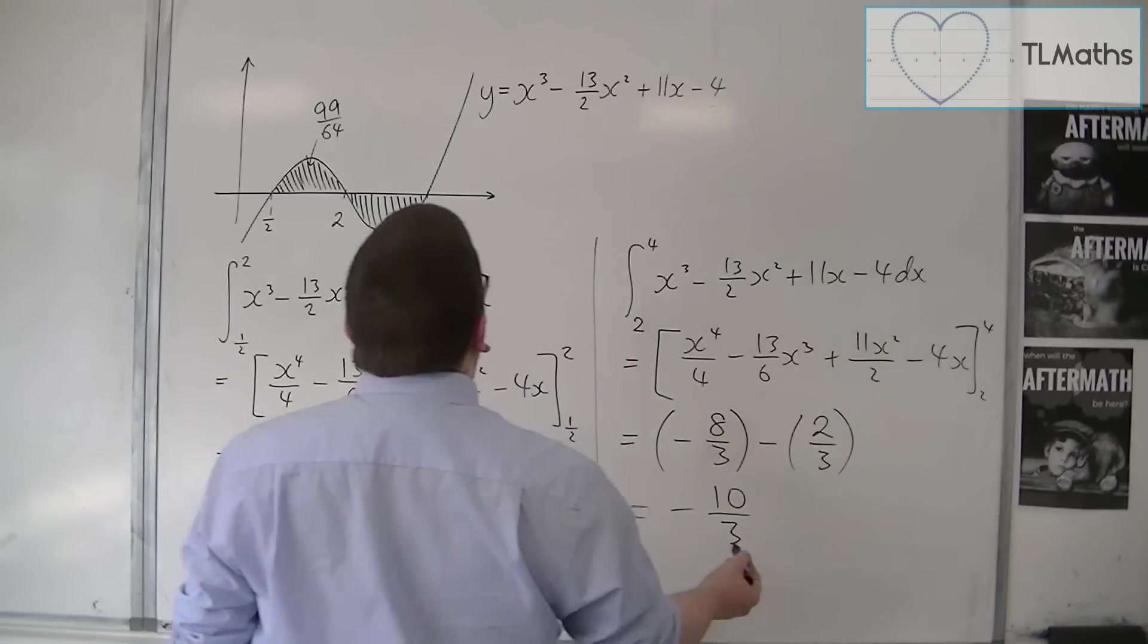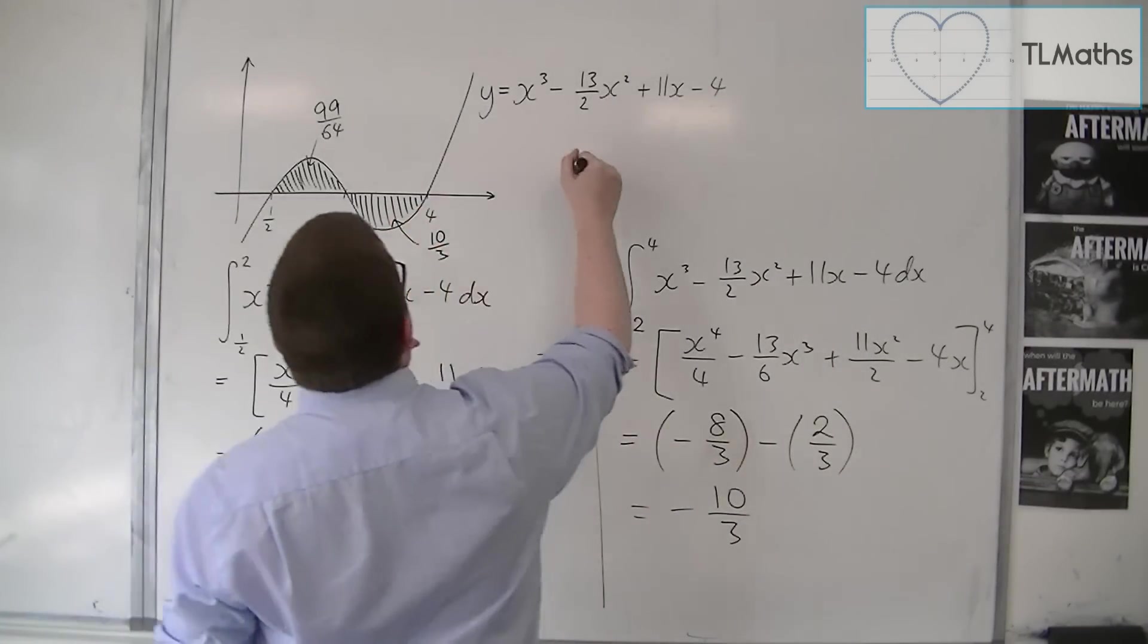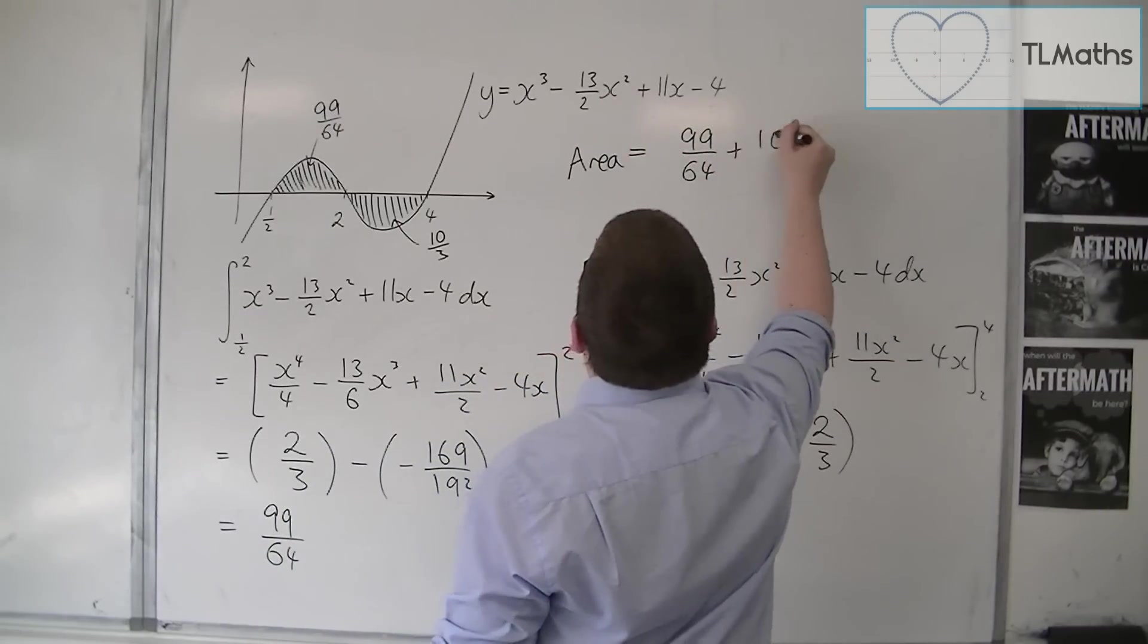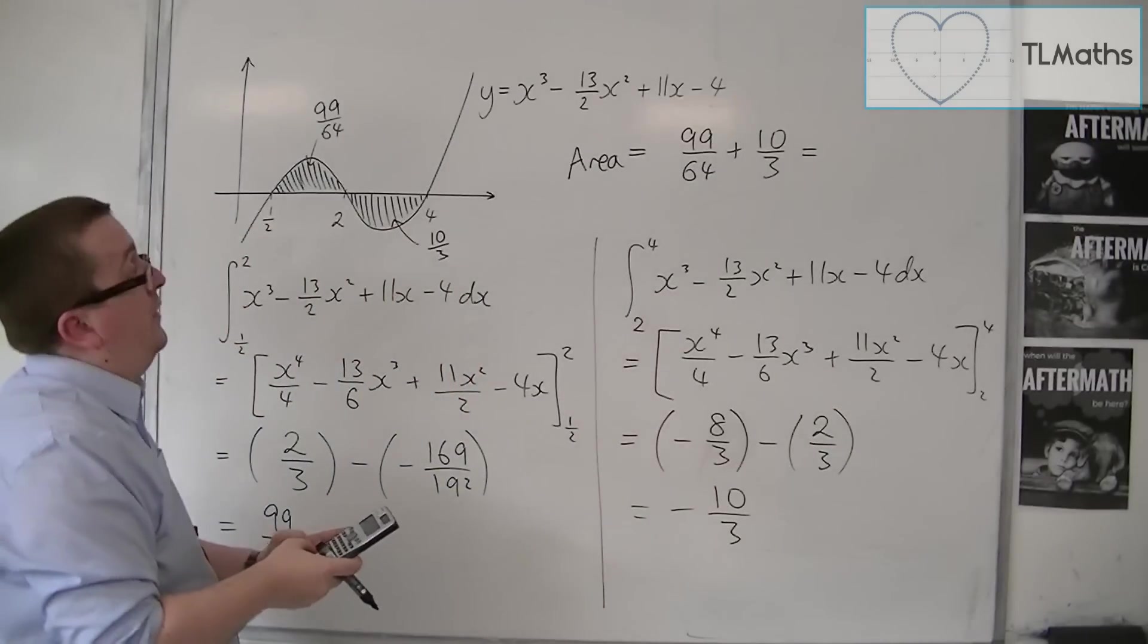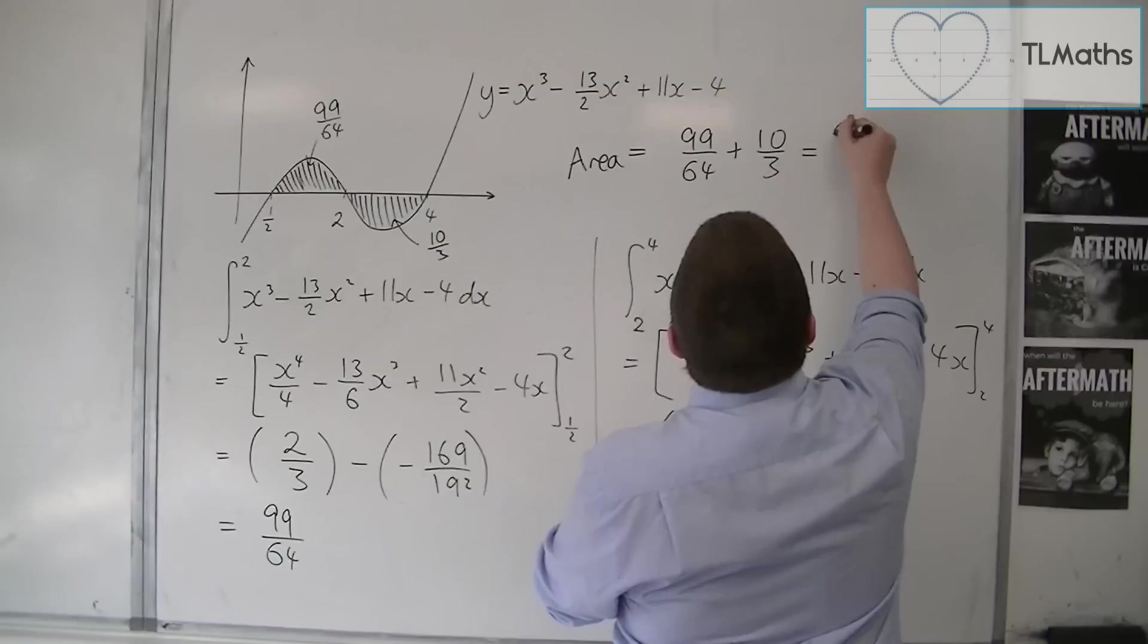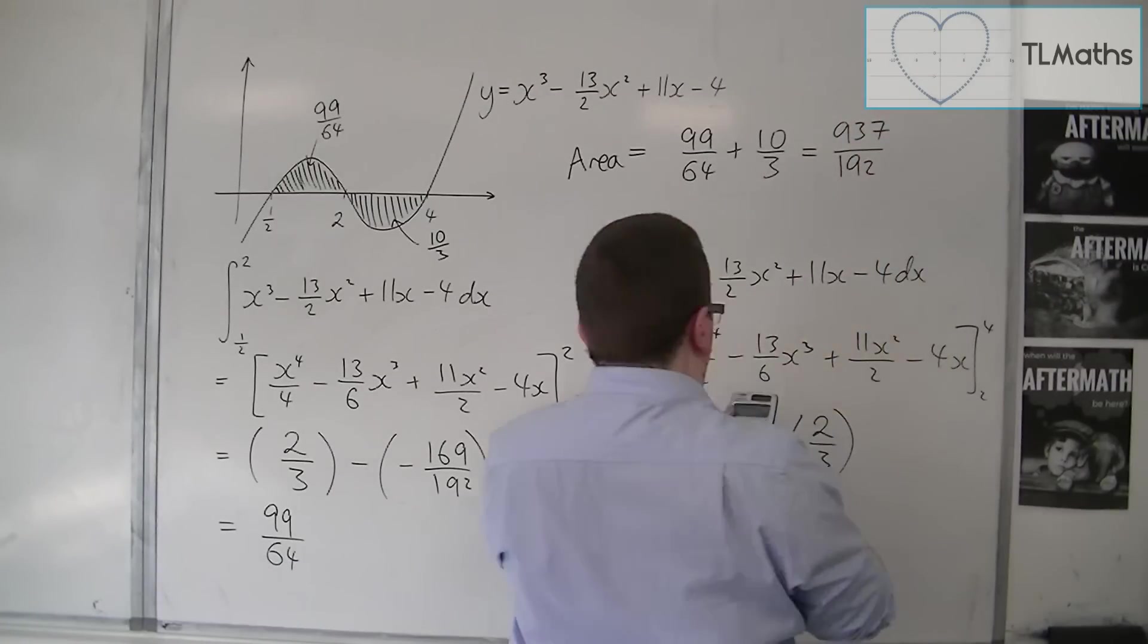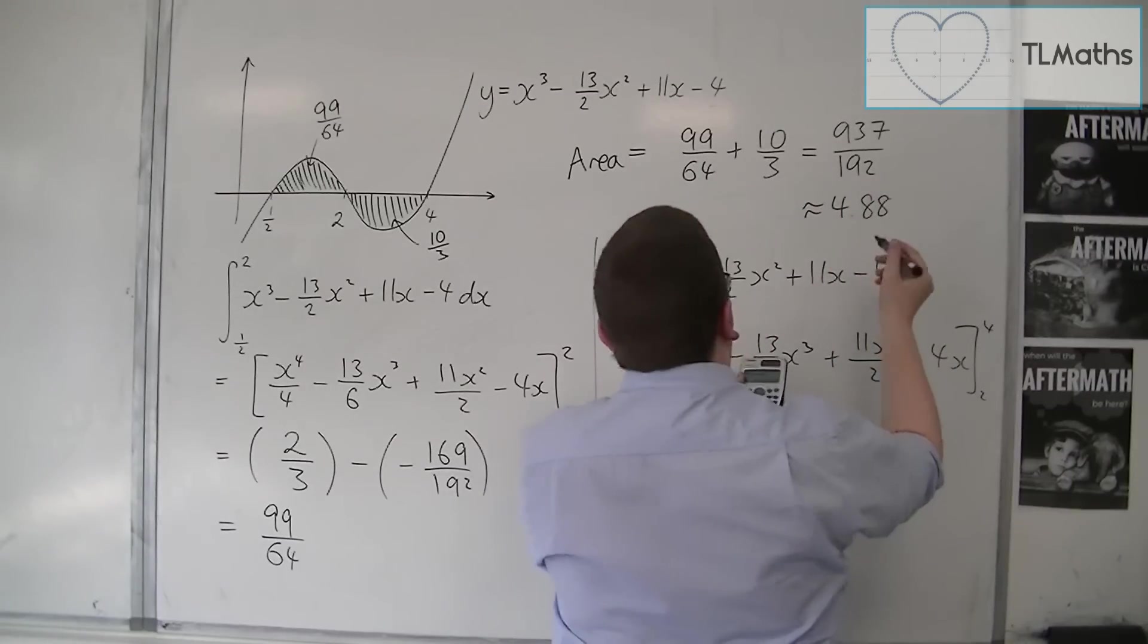So the integral is minus 10/3, but the actual area will just be 10/3. So the area is 99/64 plus 10/3, so 99/64 plus 10/3 is 937/192, which is approximately 4.88.